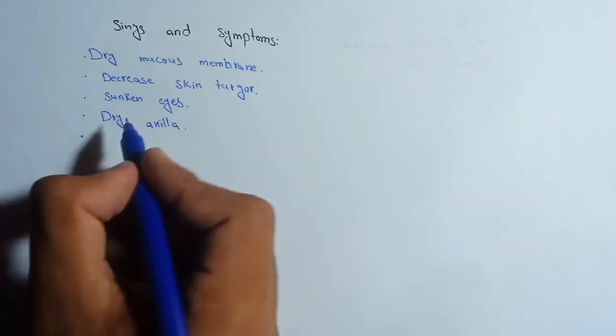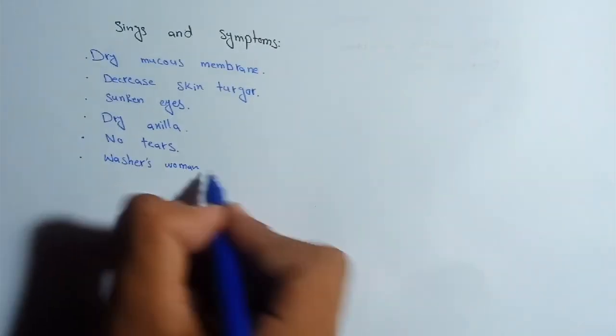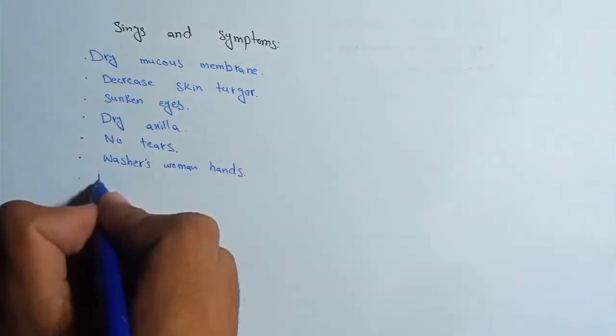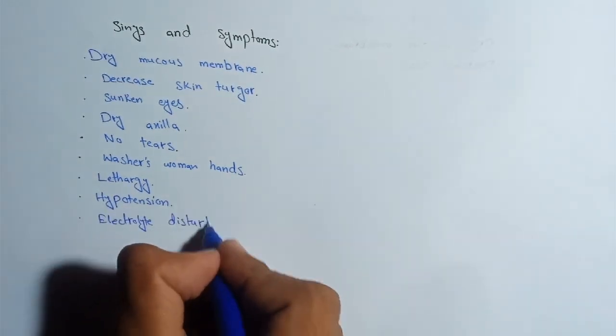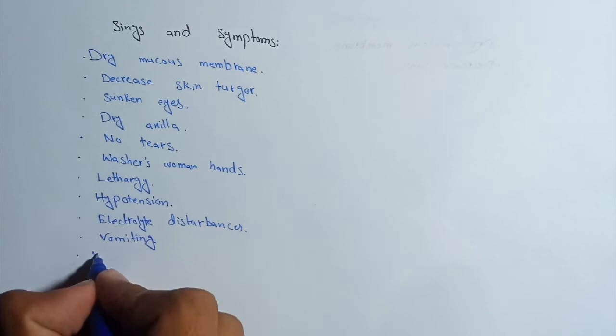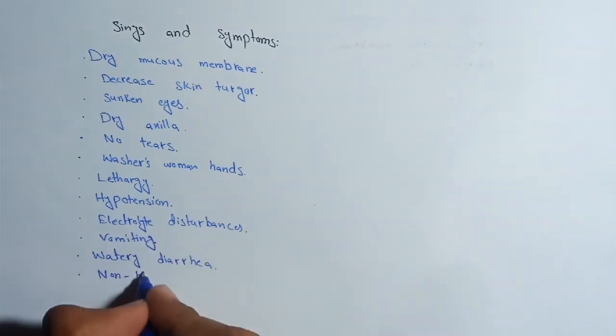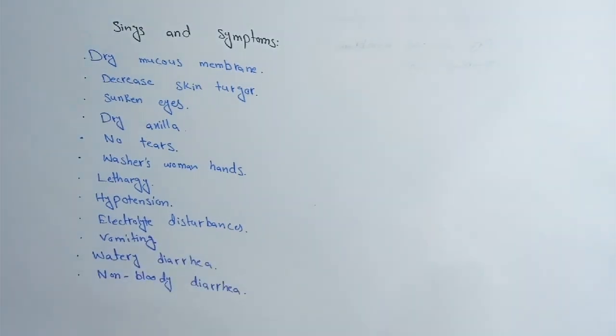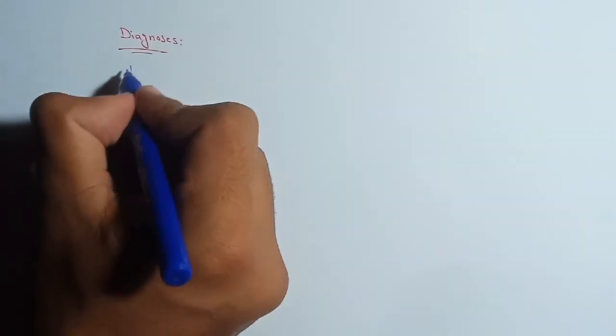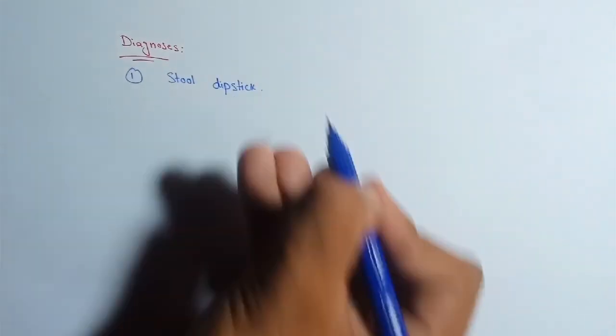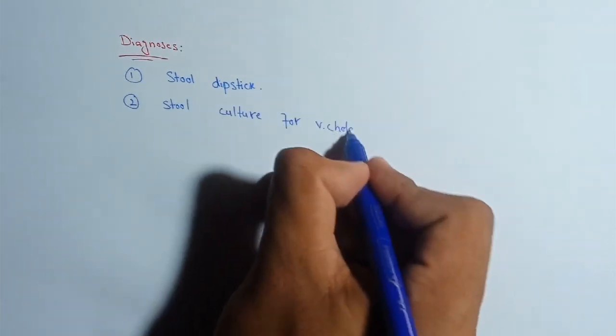Now we will study the signs and symptoms of cholera. Signs and symptoms of cholera include dry mucous membrane, decreased skin turgor, sunken eyes, dry axilla or dry armpits, no tears, washerwoman's hands which are first to lose skin, lethargy or dizziness, hypotension, electrolyte disturbances, vomiting, watery diarrhea, non-bloody diarrhea, no fever, cold clammy skin, and disorientation. For diagnosis of cholera, we have two methods: we can use stool dipstick or we can culture Vibrio cholerae.